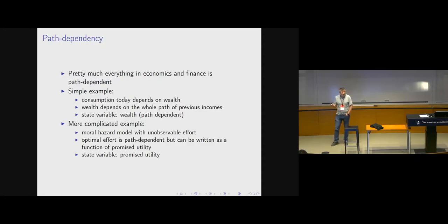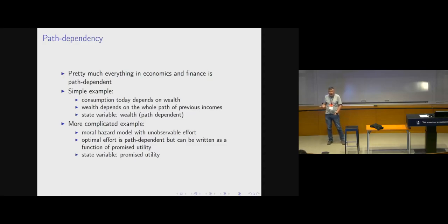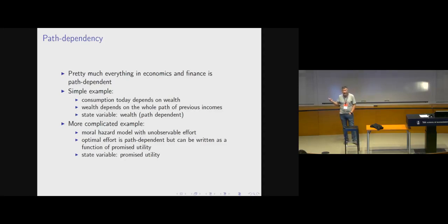Even in these rather sophisticated models, you can still write the model recursively. In addition to wealth, you would need to carry some other variable — for example, promised utility. You might need a third variable, but you'll still be able to summarize complicated path dependency in terms of a low number of state variables.